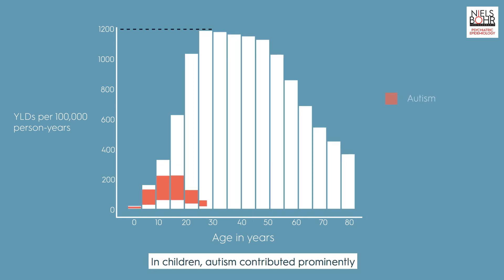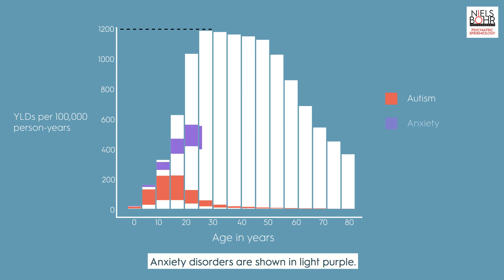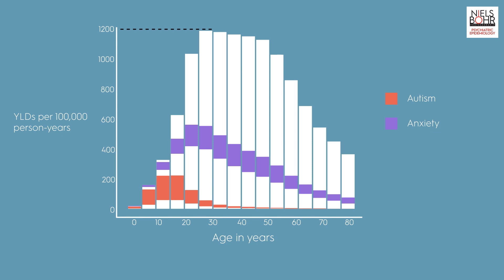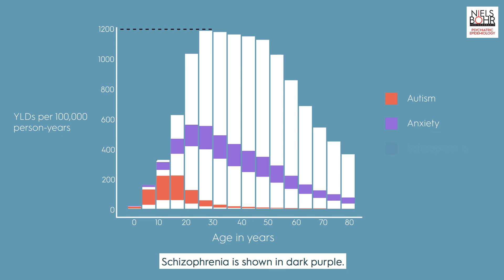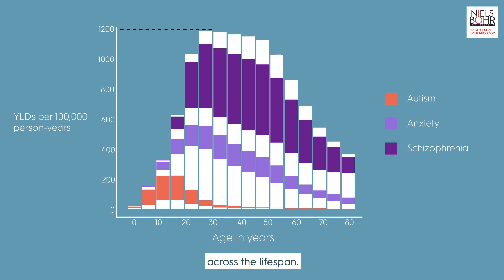In children, autism contributed prominently to years lived with disability. Anxiety disorders are shown in light purple — these impact in young adulthood and persist into older ages. Schizophrenia is shown in dark purple, and this disorder accounted for about a third of all years lived with disability across the lifespan.